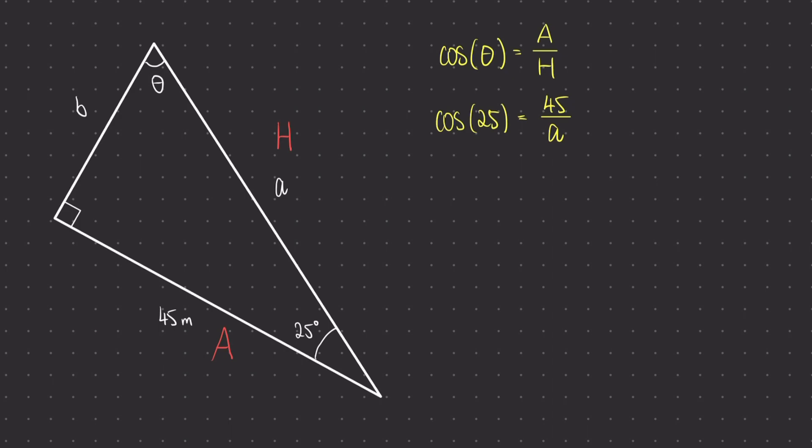Now we're going to rearrange, times both sides by a, and the next step is to divide both sides by cos 25. We can place this into our calculator now, and we find our answer is 49.65 metres.